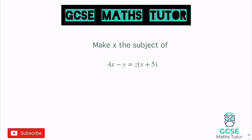Don't forget, whenever you see a bracket, we're just going to get rid of it and rewrite it without the bracket. So let's completely rewrite this but get rid of the bracket. We've got 4x minus y equals, and once we expand that, we get zx plus 5z.